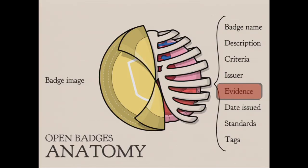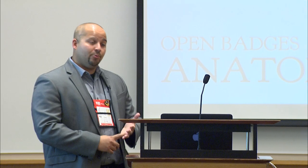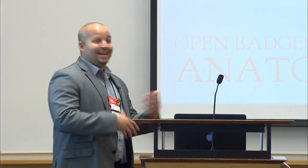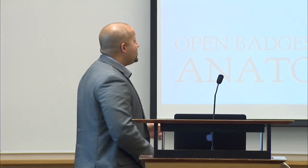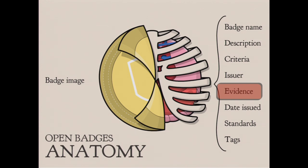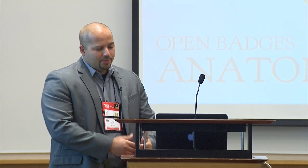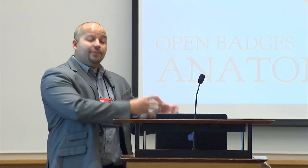They instituted this idea of the open badge. A badge is similar in idea to the achievement, or the military insignia, or the Girl Scout badge — there's a name, a description, criteria that need to be met, an issuer, maybe ties back to standards. But there are two really big differences. First is transparency: all of this information — name, description, issuer, when it was issued — is fully available to anyone who wants to look at it online. The second big piece is evidence.